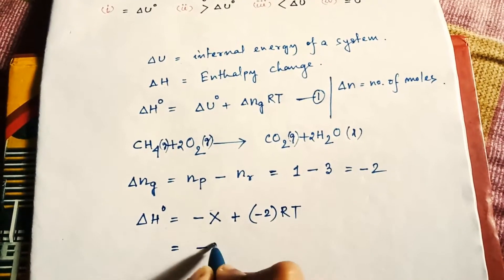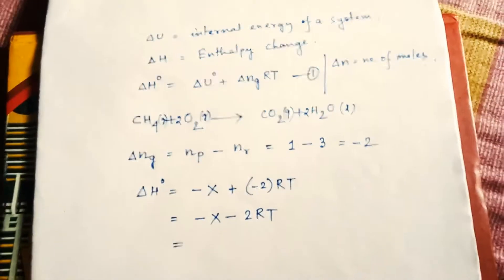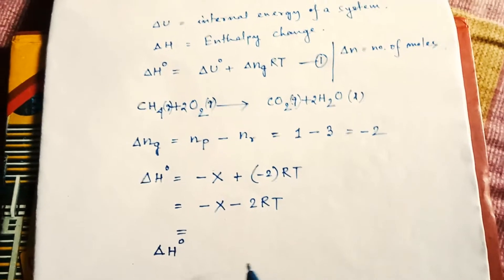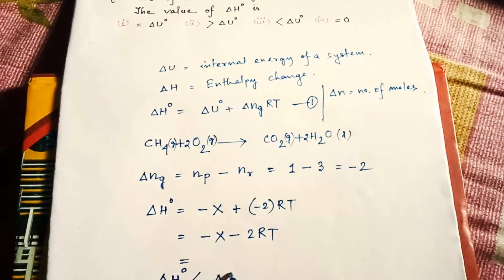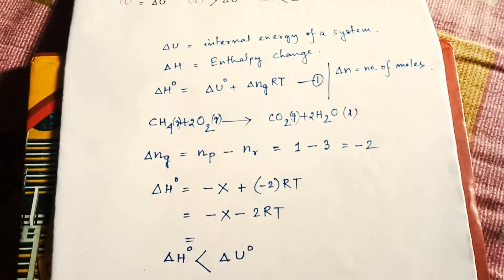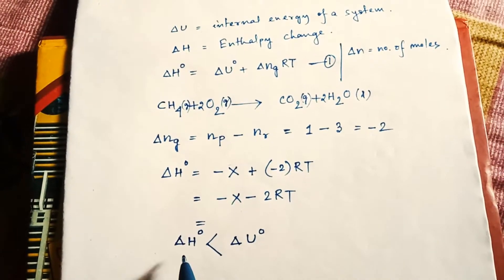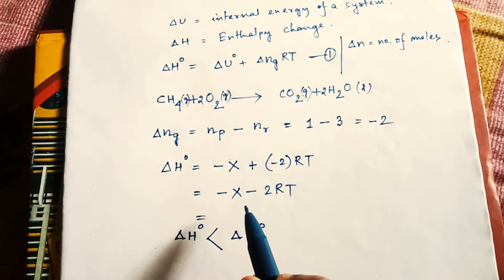So we can say ΔH° value is less than ΔU° value, because ΔU° value is only -X and ΔH° value is -X - 2RT, which is more negative, that means less than ΔU° value.